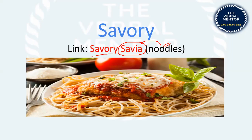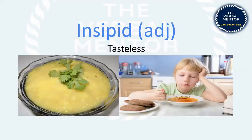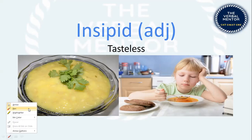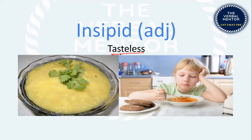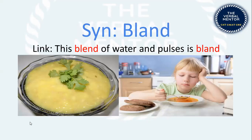Now the antonyms. 'Insipid' means tasteless — like porridge or khichdi, which is called polenta in English. Memory tip: you can't even take a sip because it is insipid. 'I can't sip this insipid soup' — that's how you retain this word.